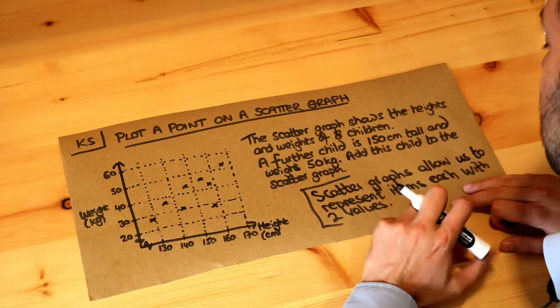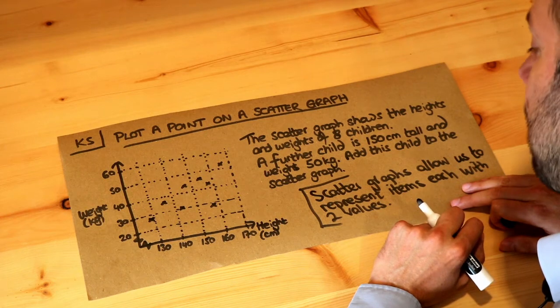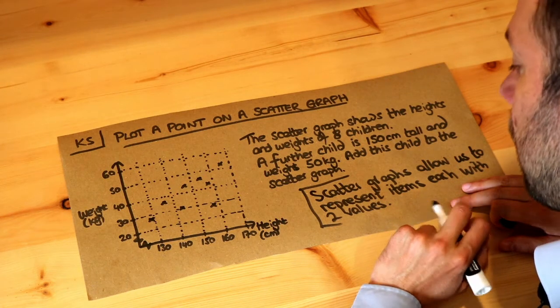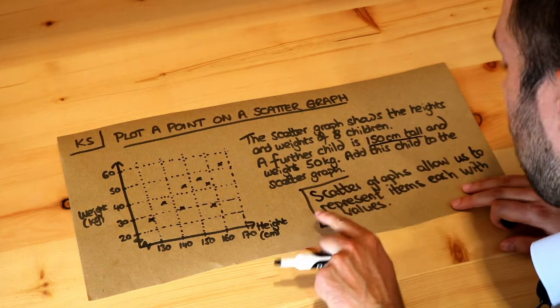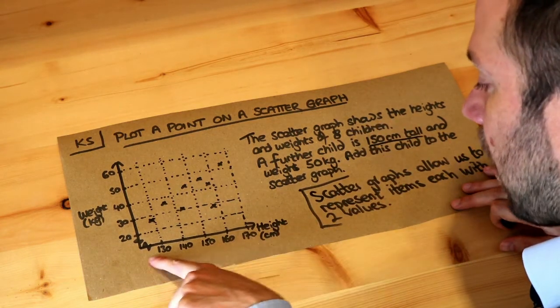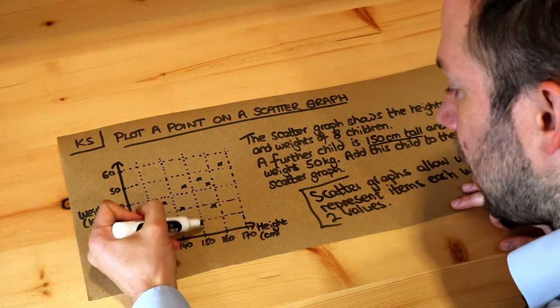So if the child is 150 centimeters tall, that's their height. The height is going to be 150. That's 150 here. So we go up 150.